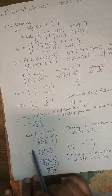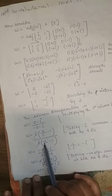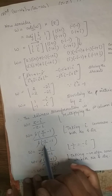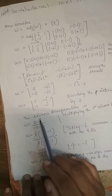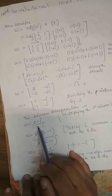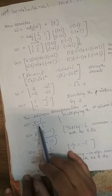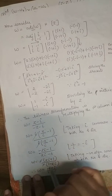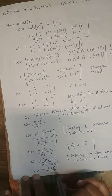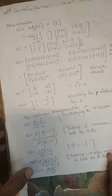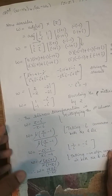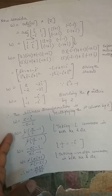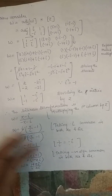Further simplification can be avoided — you may keep the answer in that intermediate form — but it is better to simplify fully. This completes Problem 1 on finding the bilinear transformation.